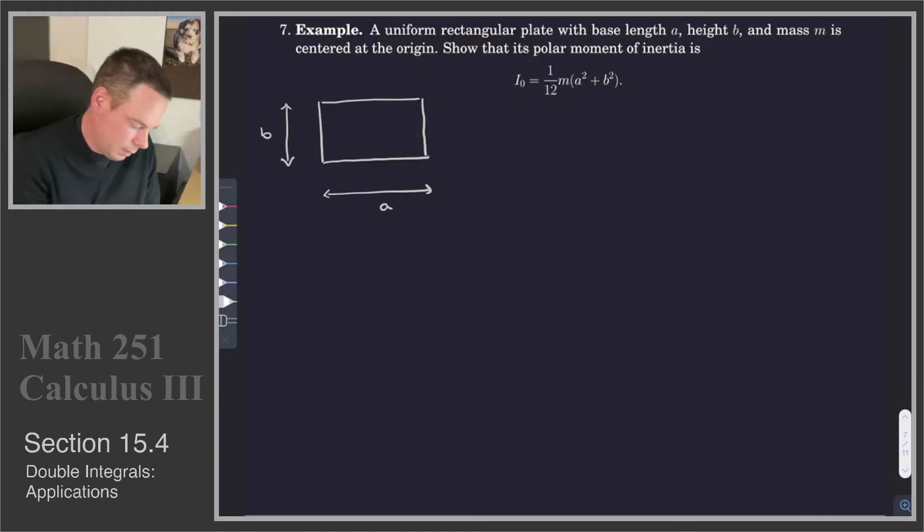So we've got a base length of A and height B. And we know that the mass is M. And it's centered at the origin. So we've got our center here. Maybe I'll put my axes in a different color.